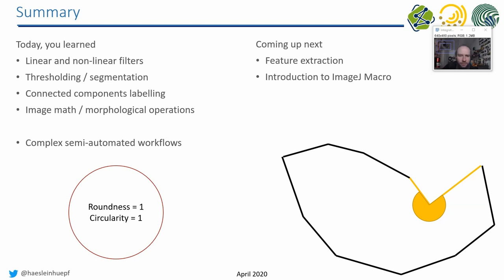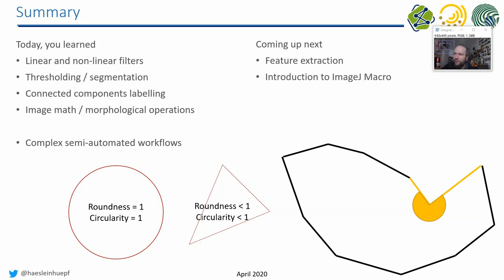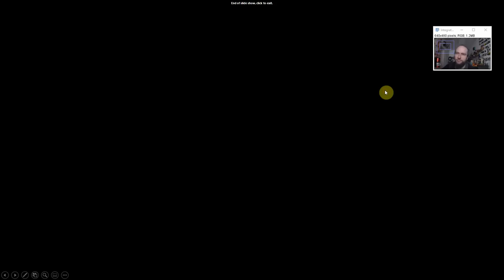Next week, we will talk about feature extraction and I will give you an introduction to ImageJ Macro. Today you are clicking a lot and will have many windows open, which can get confusing — which image was generated how, and why is it black-white instead of white-black. With ImageJ Macro, when you program these things, it becomes more manageable. Today you do everything manually, and next week we will start with automation. See you next week, everyone!